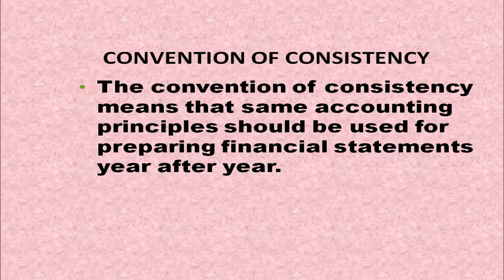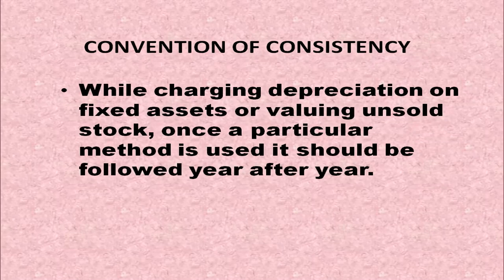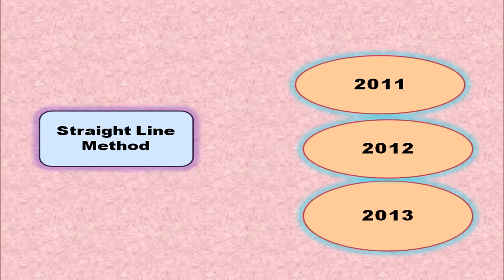Let us study the first convention: Convention of Consistency. It means that the same accounting principles should be used for preparing financial statements year after year, while charging depreciation on fixed assets or while valuing unsold stock. Once a particular method is used, it should be followed year after year. For example, if the straight line method is used in 2011, it should be followed in 2012 and 2013 — then only comparison will be possible.